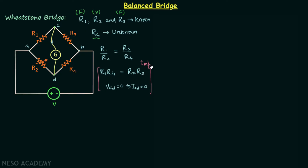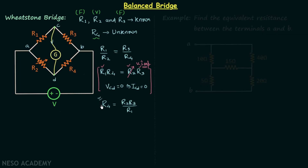We can achieve this balanced condition by varying R2 — keep changing R2 until the galvanometer shows zero deflection. When zero deflection is shown, voltage is zero, which implies R1·R4 equals R2·R3. Since we know R1, R2, and R3, the unknown resistance R4 is equal to R2·R3 divided by R1. In this way we can calculate the unknown resistance using the Wheatstone bridge.